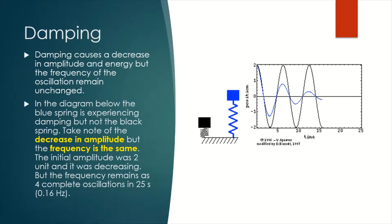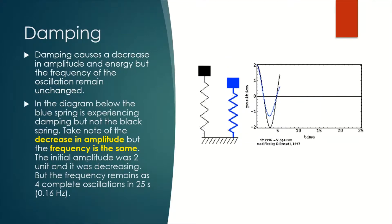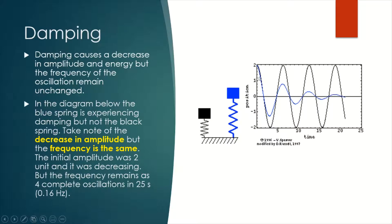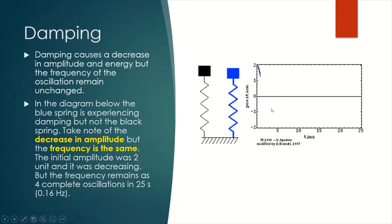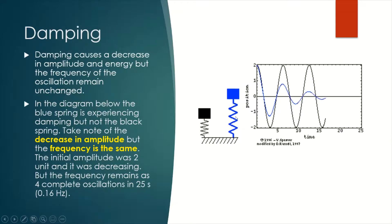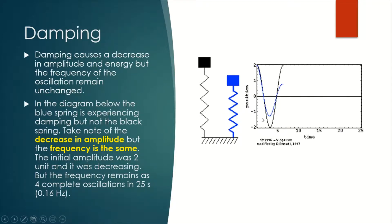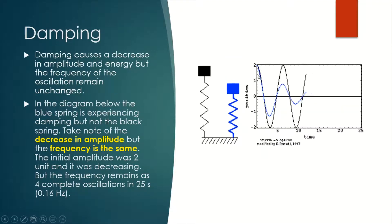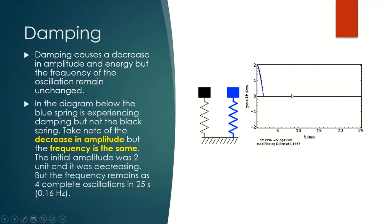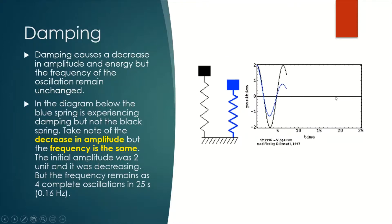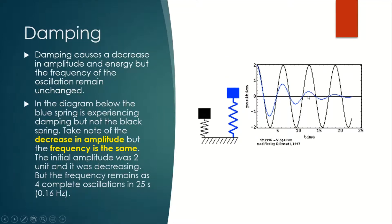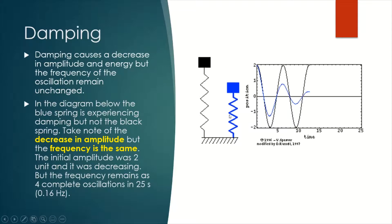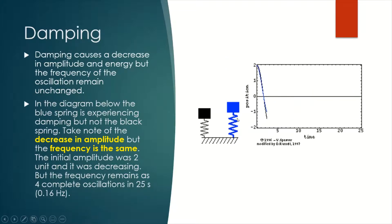Let's look at their respective graphs. The black graph corresponds to the black spring and the blue graph is for the blue spring. As we can see very clearly, the amplitude of the blue spring decreases with time — amplitude decreases — which means the blue spring undergoes damping.